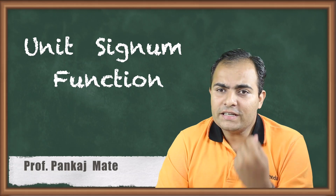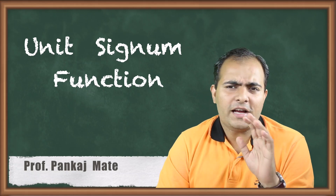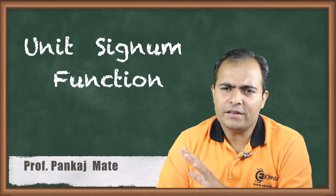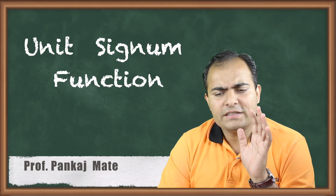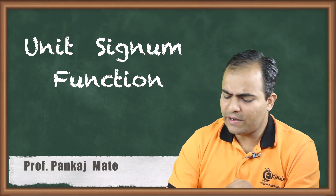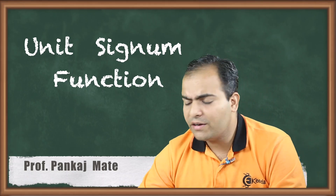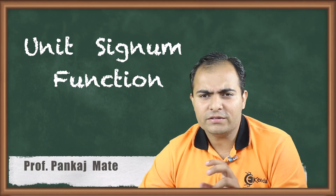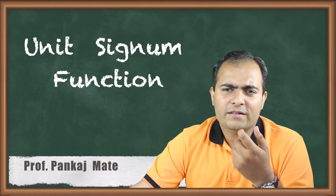Basically signum function is important. Unit means just the amplitude will be 1. This signum function is represented by sgn — this was the way to represent that function.